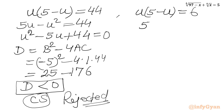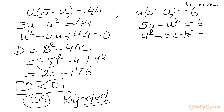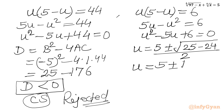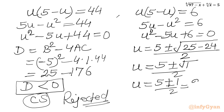Now solving the second case: 5u minus u² equals 6, or u² minus 5u plus 6 equals 0. Applying the quadratic formula: u equals (5 ± √(25 minus 24)) over 2 equals (5 ± √1) over 2 equals (5 ± 1) over 2. With the plus sign we get 6/2 equals 3, and with the minus sign we get 4/2 equals 2. So u equals 2 or u equals 3.